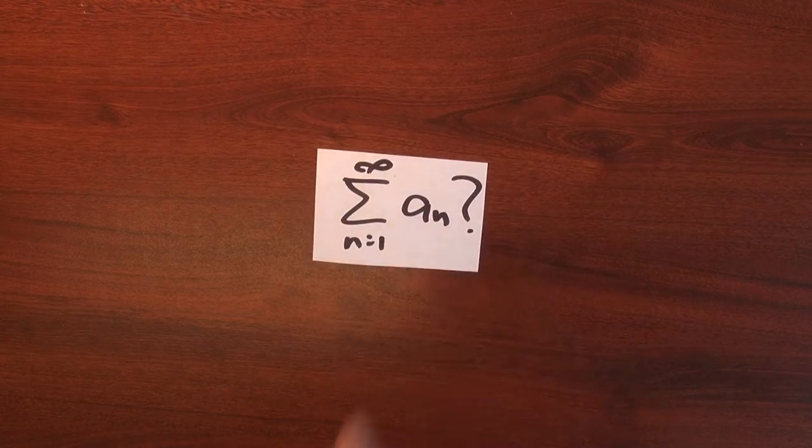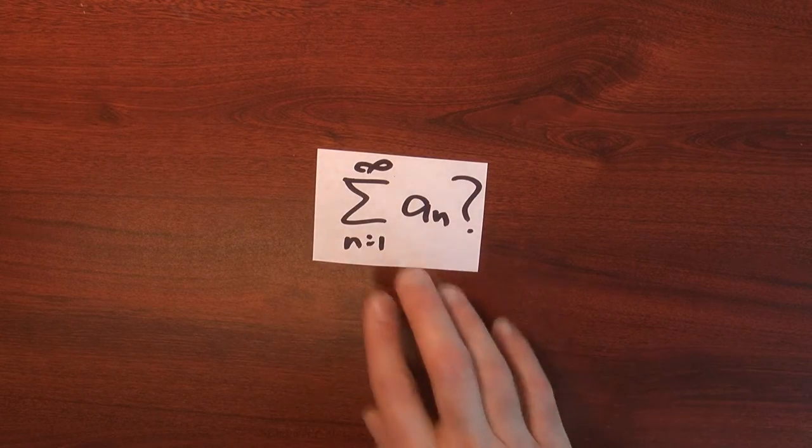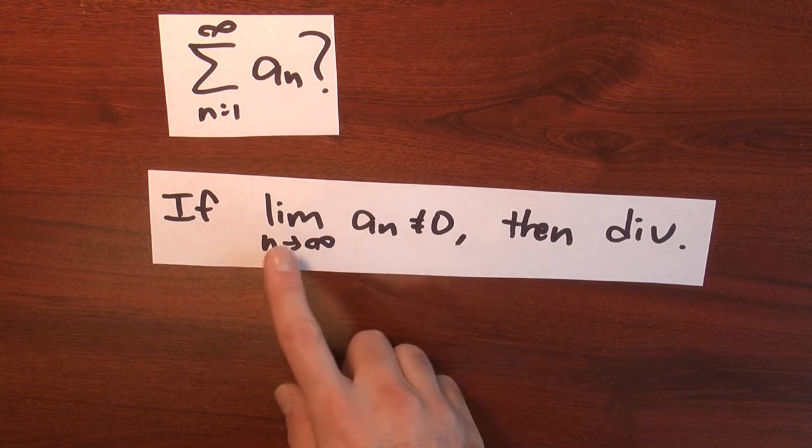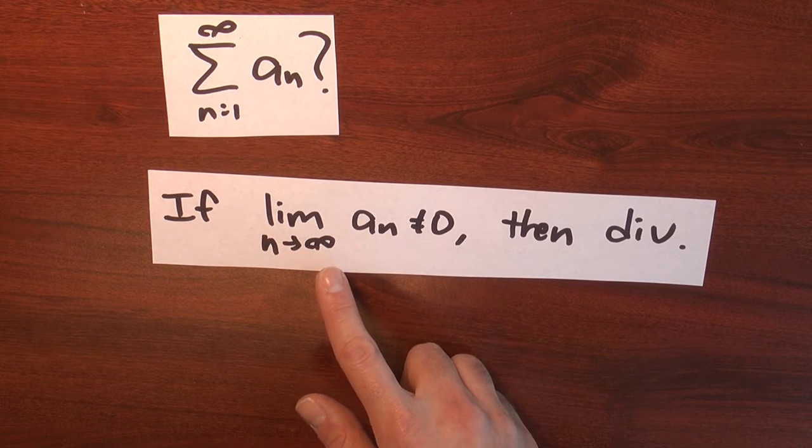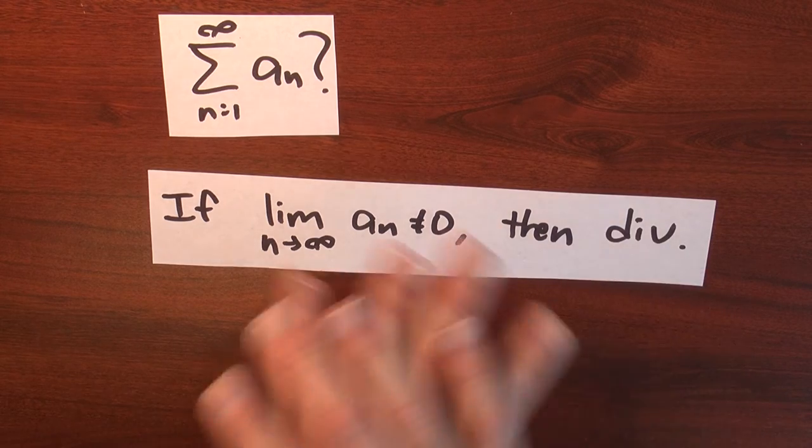That's often how this is going to work. Suppose you want to analyze this series, the sum n goes from 1 to infinity of a sub n. You've been given this task. Well, the first thing I'd suggest you do is the limit test. Take a look at the limit of a sub n as n approaches infinity. Because if that's not 0, then you know your series diverges. You're done.